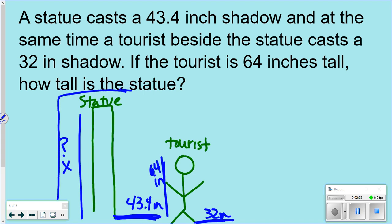I would put the statue, so there's my statue, I would put that in a proportion on one side or in a ratio on one side. So I'd have X over 43.4, is equal to, now what corresponds with how tall the statue is? Well, what corresponds is how tall the tourist is. So 64 would be over here, and the shadows obviously correspond. So this is what it would look like.